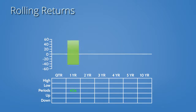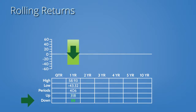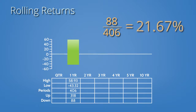We stack ranked them from high to low, discovering our highest one-year return was a 58.93% gain, and the lowest was a 43.32% loss. There were 318 one-year trailing returns of 0% or greater, and 88 one-year trailing returns that were negative. Had an investor bought the Vanguard S&P 500 fund on the first day of any month since its inception, about 22% of the time money would have been lost.